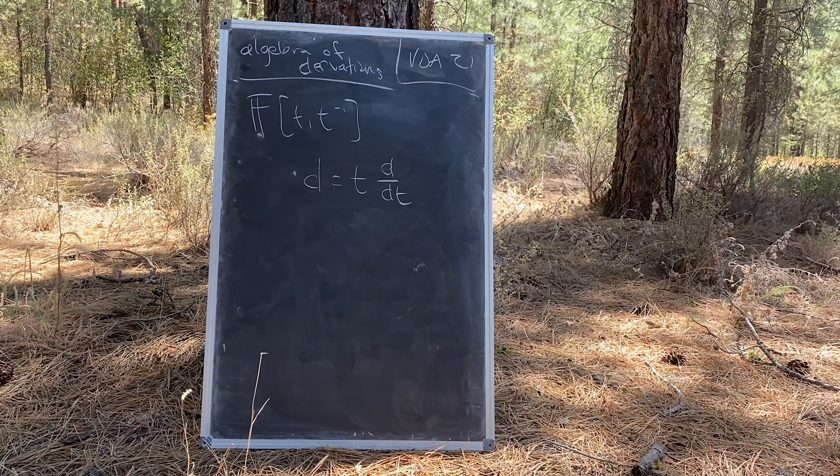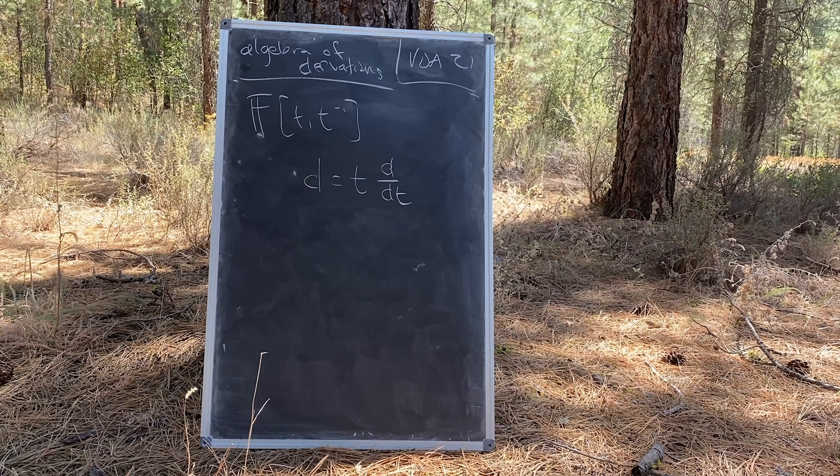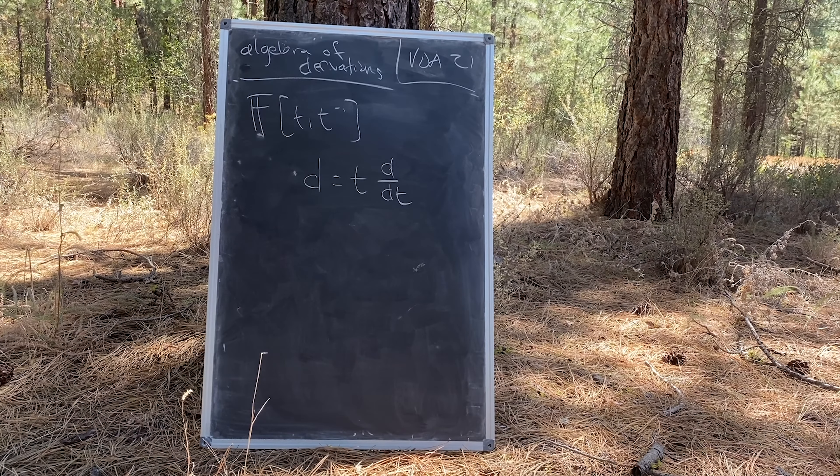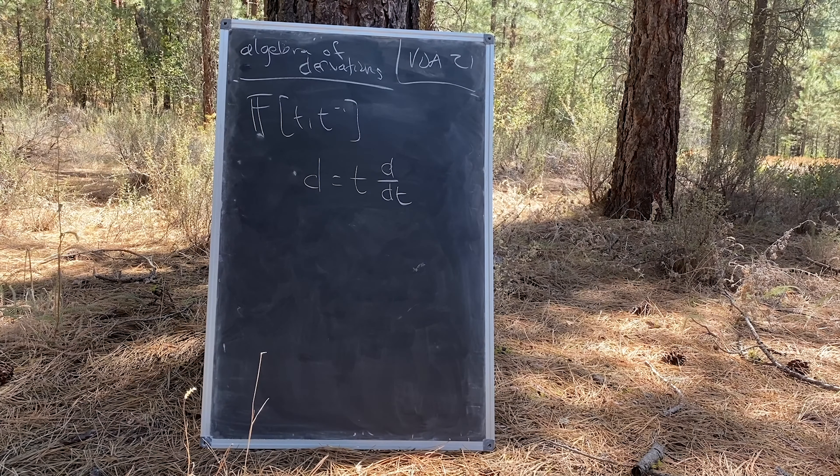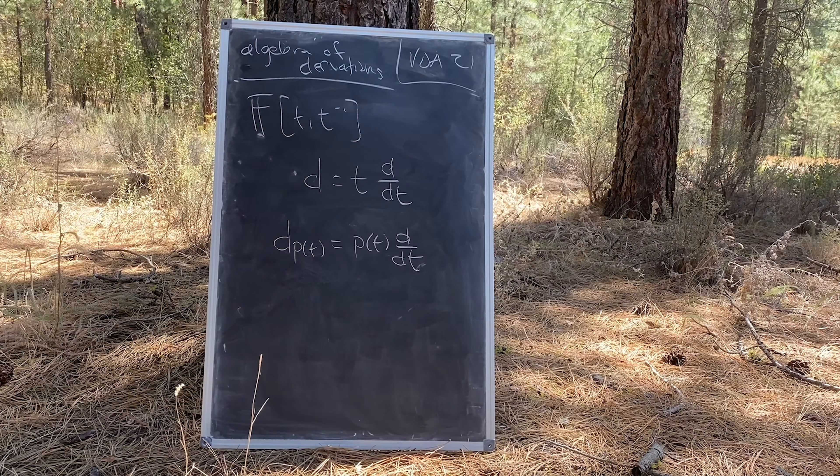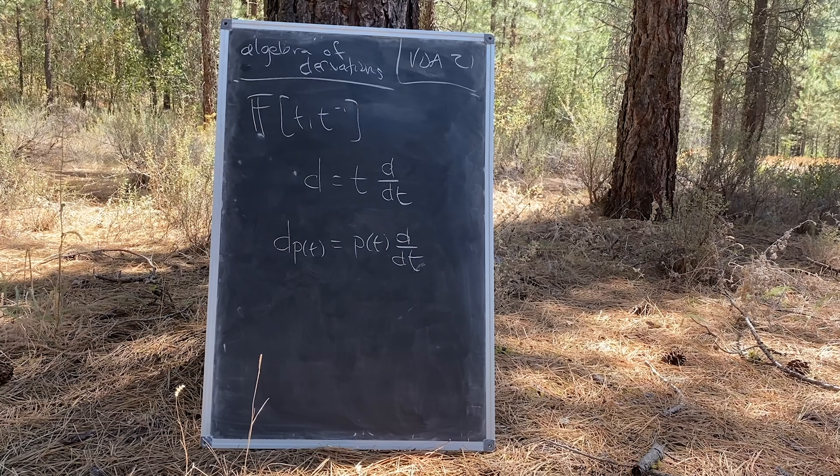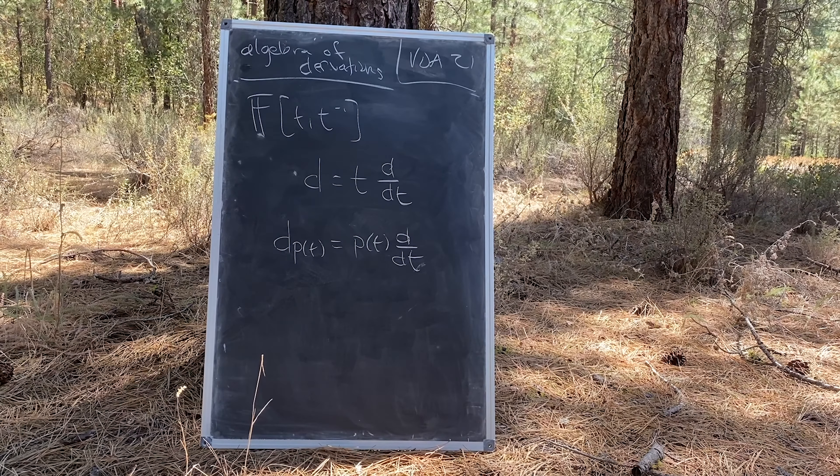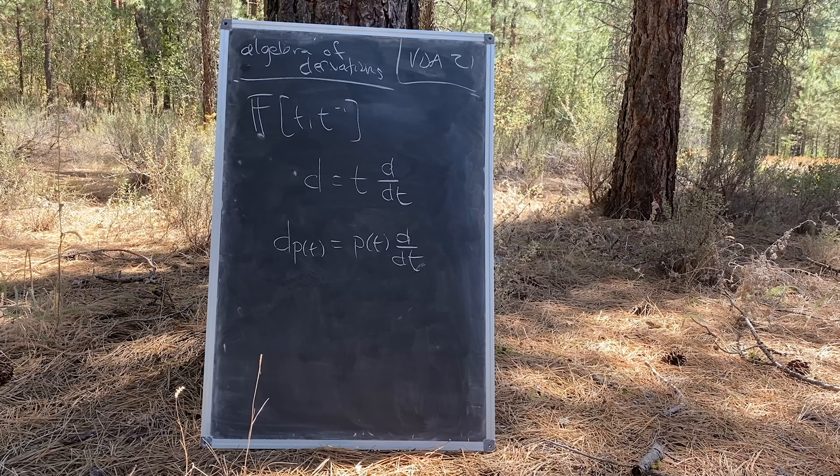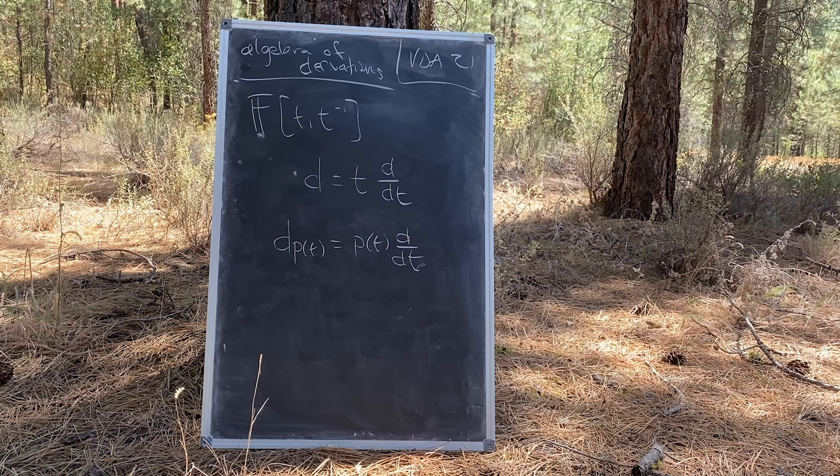Recall that they have a degree derivation d equal to t times d by dt. Let's generalize that out to some other derivations by defining the operator d of p of t, which is just p of t times d by dt, where p of t is some Laurent polynomial. Very meta.